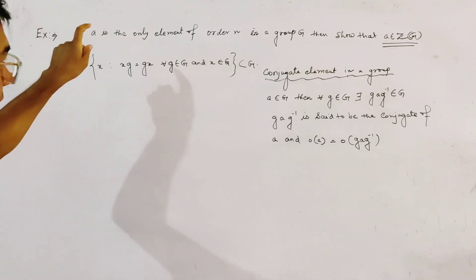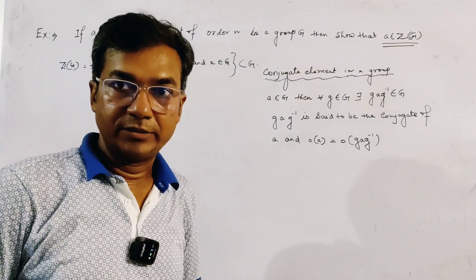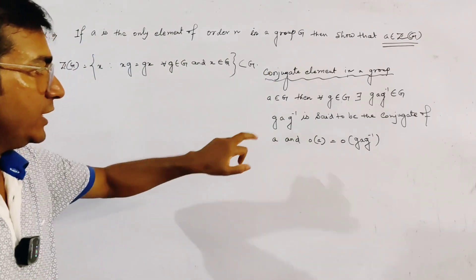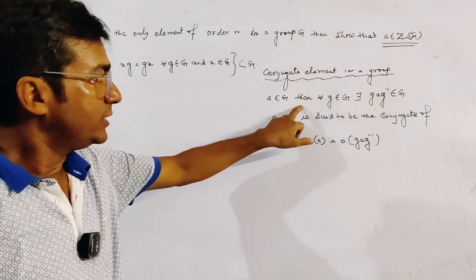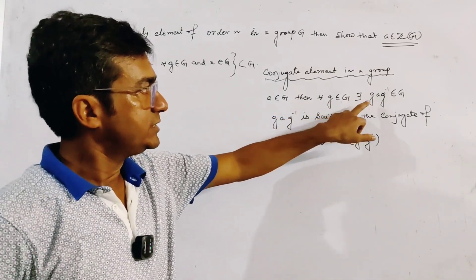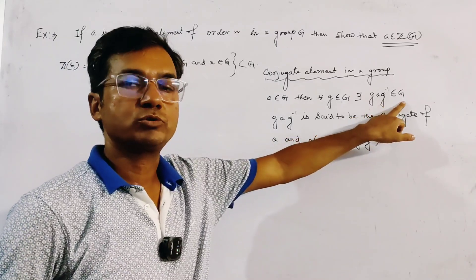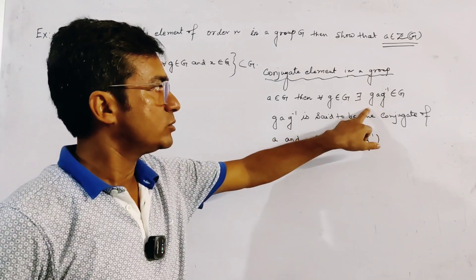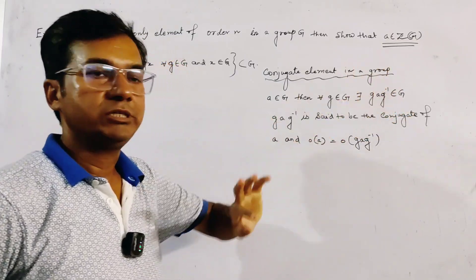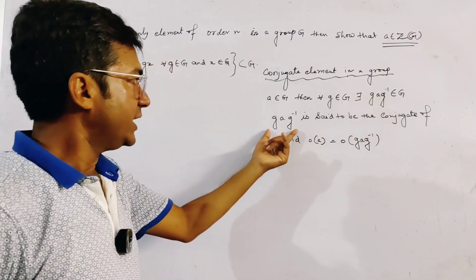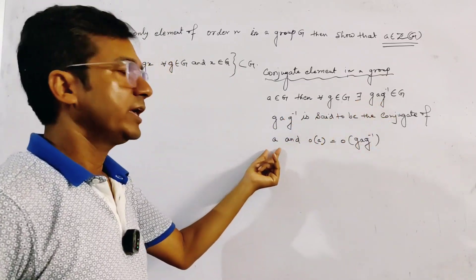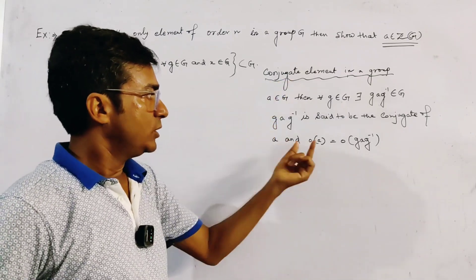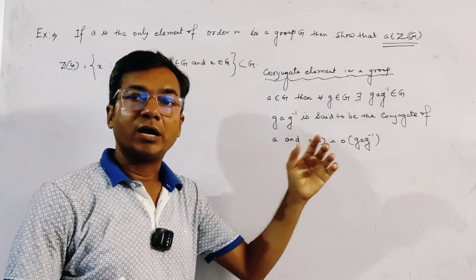Here we use the concept of conjugate elements. If a belongs to G, then for all g in G, the element g·a·g⁻¹ also belongs to G, by the closure property. This element g·a·g⁻¹ is called the conjugate element of a. An important property is that the order of a and the order of g·a·g⁻¹ are the same.